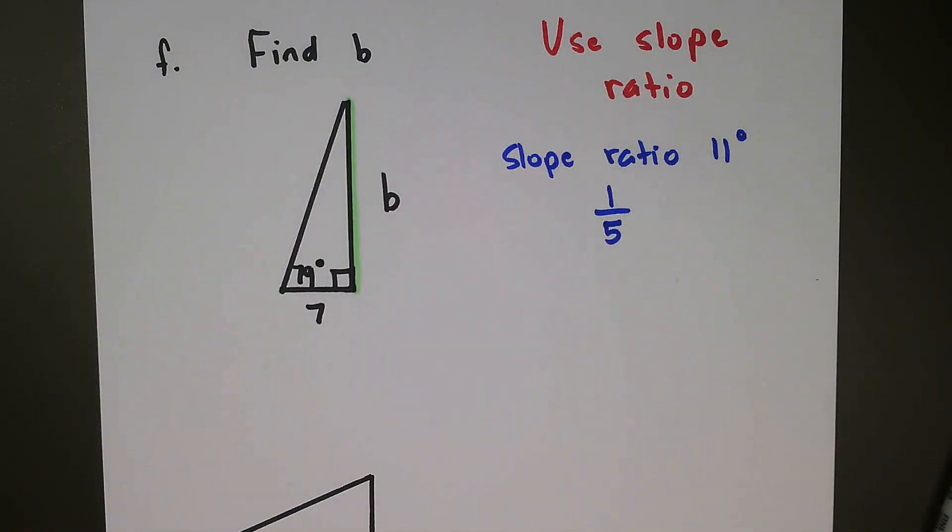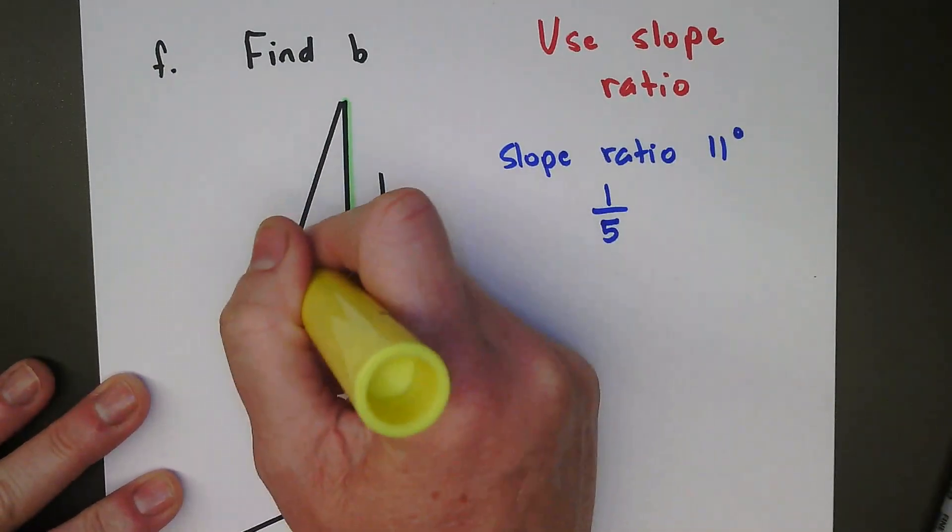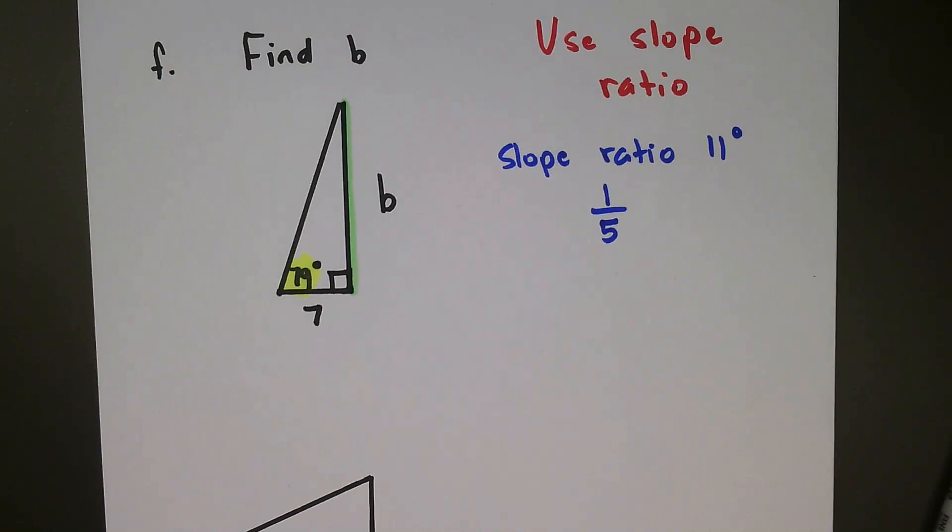Now, looking at this, you might think, well, that's not going to be super helpful, because if I'm looking at the angle in this triangle that's given is a 79-degree angle, and that is not 11 degrees.